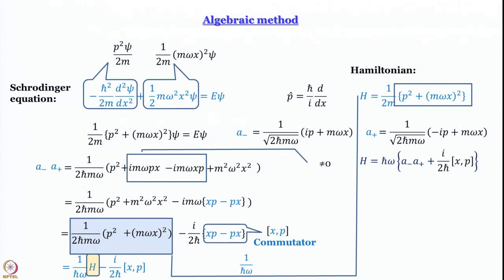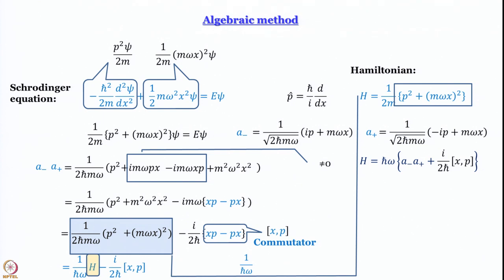Rearranging, the Hamiltonian H becomes ℏω · (a⁻a⁺) + (i/2ℏ)·[x, p]. The next step is to work out the value of the commutator of the position and momentum operators. Let us do that.